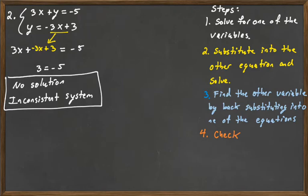One way we can easily see this: solve the first equation for y, and you have y equals negative 3x minus 5. That means these are parallel lines — they don't have the same y-intercepts, so they're not going to ever cross each other.